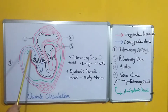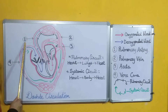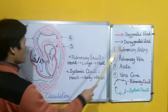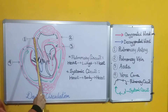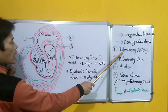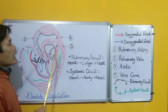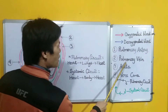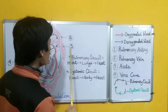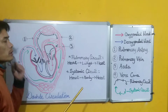Number one is the pulmonary artery, labeled here. This blood vessel carries blood from the heart to the lungs. Number two is the pulmonary vein. This blood vessel brings blood from the lungs and drains it into the heart.